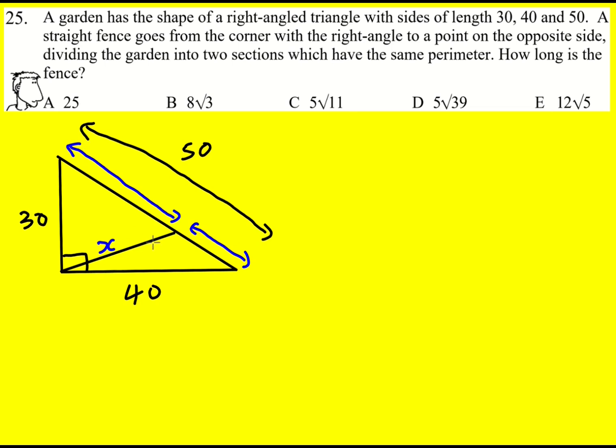We know that x is shared by both sections and so I need to think about how I can split 50 up to get the same amount out of the 40 in this bit and the 30 in this bit. And actually if I make this one 20 and this one 30 then they'll both be 60. So that's how we can split it up.